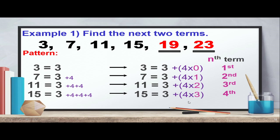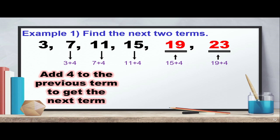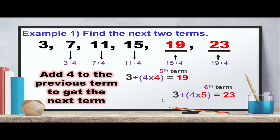The fifth term is 4×4+3 = 19, and the sixth term is 4×5+3 = 23. We can also think of it simply as adding 4 to the preceding number each time: 3+4=7, 7+4=11, 11+4=15, 15+4=19, 19+4=23. The rule is: add 4 to the previous number to get the next term.